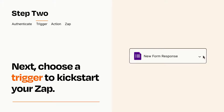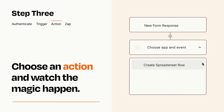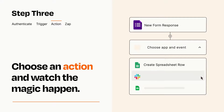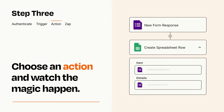This last part is where the magic happens. Choose the action you want to happen in your target app. You'll see a bunch of fields where you can specify the details of your Zap. You can type free form text or pull data in from your trigger step as needed.